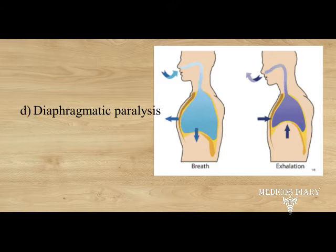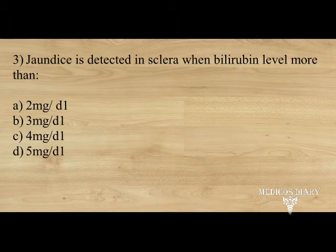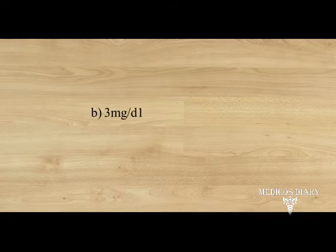So in diaphragmatic paralysis, paradoxical breathing takes place. Next one: jaundice is detected in the sclera when bilirubin level is more than — option A. 2 mg/dL, B. 3 mg/dL, C. 4 mg/dL, D. 5 mg/dL. Answer: option B, three milligrams per deciliter. The presence of scleral icterus indicates a serum bilirubin of at least 3 mg/dL.